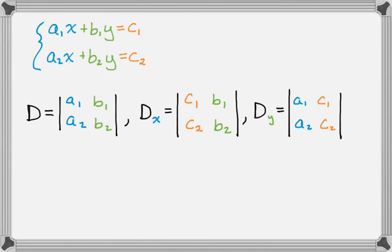And now to solve for x, what I do is D sub x over D, and when I want to solve for y, I do D sub y over D. And that's it, so it's really, really fast. You just have to remember which column to replace.